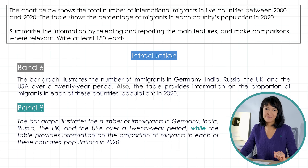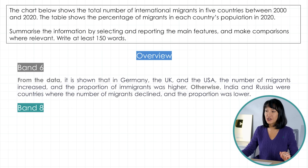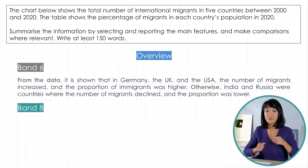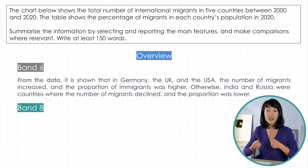Then the student goes on to give what we call an overview of the data — in other words, what is it really all about? So we have what it is and then what it means. 'From the data, it is shown that in Germany, the UK and the USA, the number of migrants increased and the proportion of migrants was higher. Otherwise, India and Russia were countries where the number of migrants declined and the proportion was lower.' The key point here is that the same three countries where migrant levels have risen also have high percentages of migrants in terms of population, and the reverse has occurred in the other two countries.